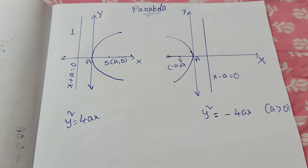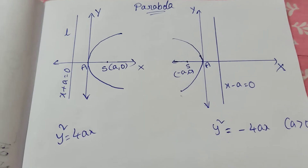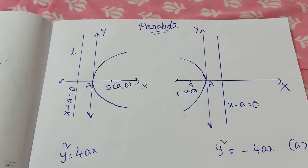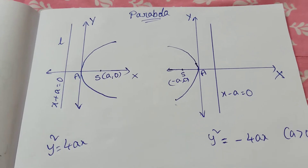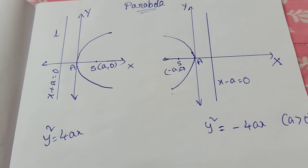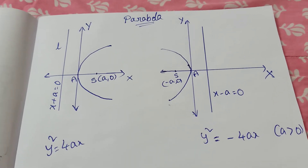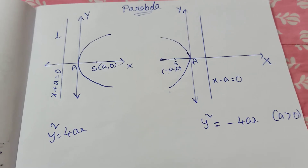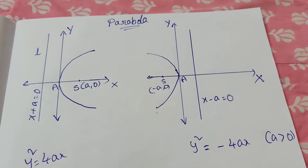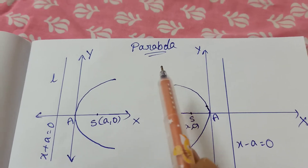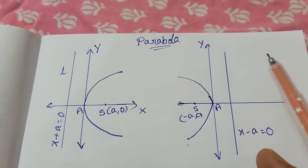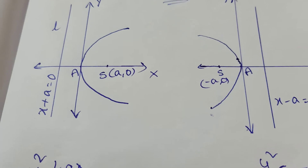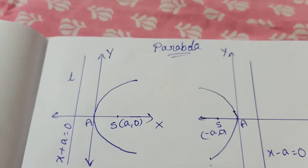Hi students, today parabola is a pretty unique part. After parabola, next is ellipse, then hyperbola. If you're new, please like, subscribe and share. Today, parabola is a very important topic. Once parabola is clear, next ellipse, then hyperbola. Now, the general formula for parabola is y squared equals 4ax.